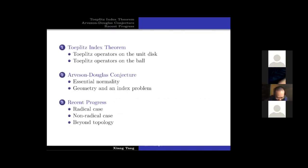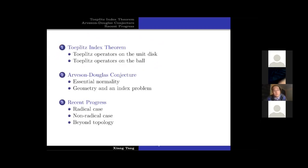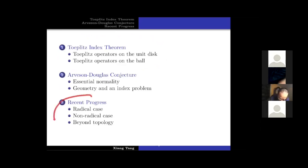There are three parts to my talk. In the first part, I will give a quick review of the Toeplitz index theorem — our study is essentially a generalization of this classical, well-known problem. In the second part, I plan to explain the Arveson-Douglas conjecture and the analytic Grothendieck-Riemann-Roch problem. In the last part, I will present some progress we have made in the study of this problem.